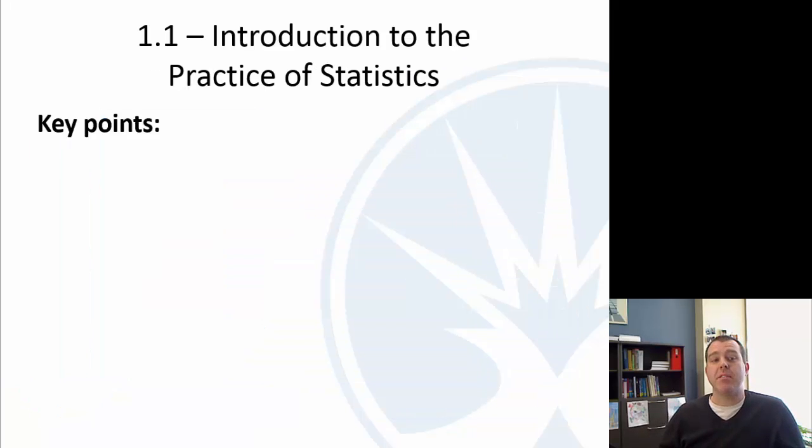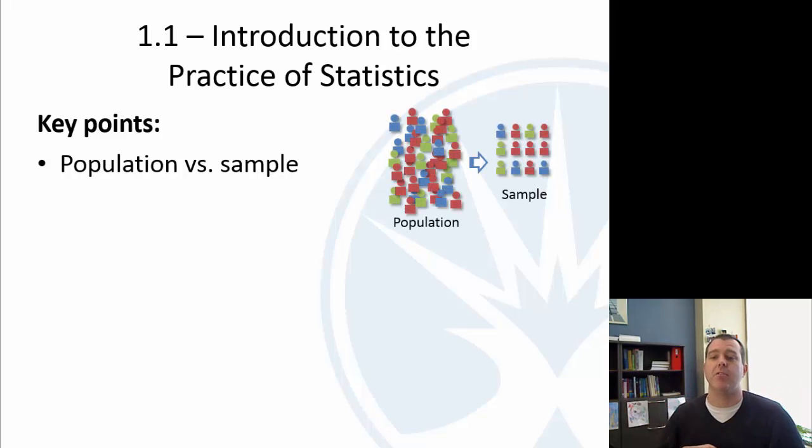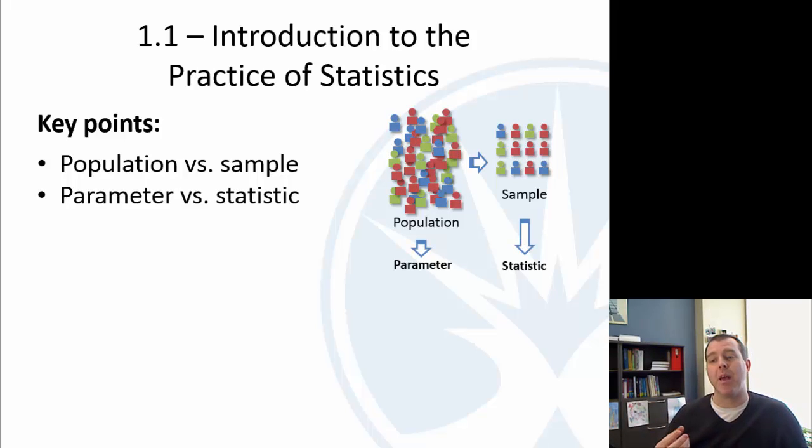Alright, so let's wrap this up. Key points here from this section. We've got this population versus sample, where the population is everybody, and then sample is a small subset. We have parameter versus statistics. So when I calculate something about a population, that's a parameter, which we often don't know, incidentally. When I calculate something about a sample, it's a statistic.